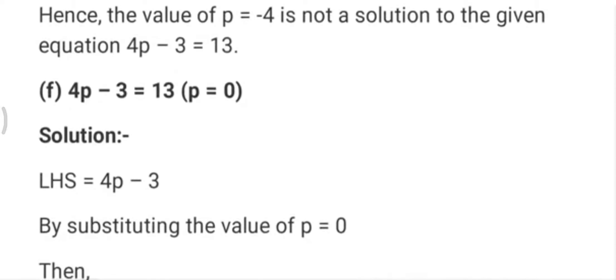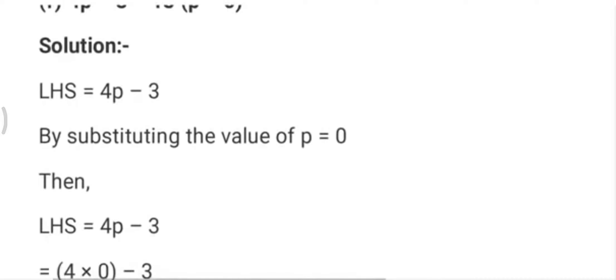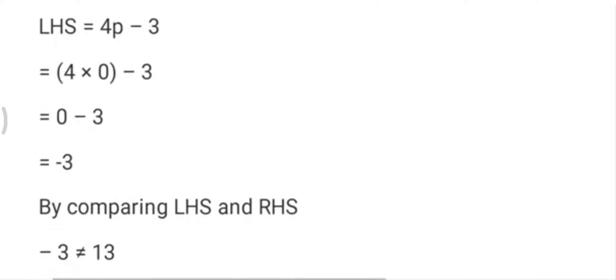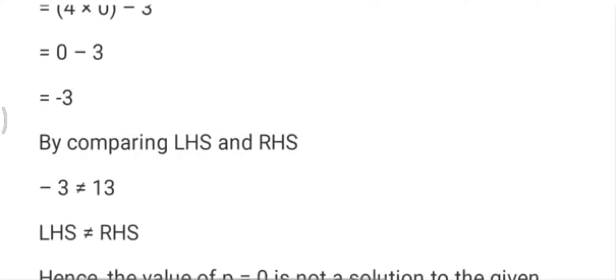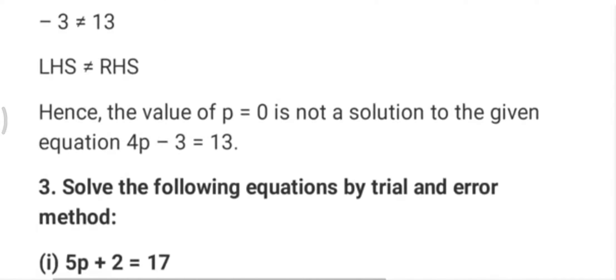In part f, 4p-3=13 with p=0. So 4 into 0 is 0, minus 3 is -3, which is not equal to 13. So p=0 is also not the solution.